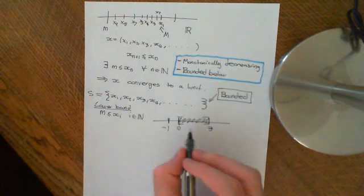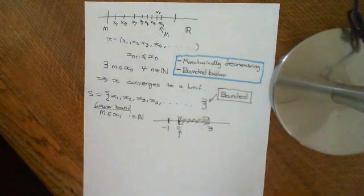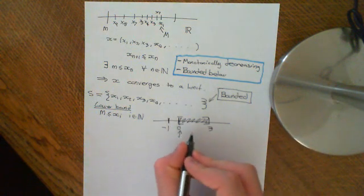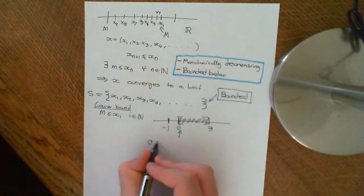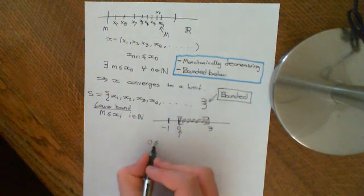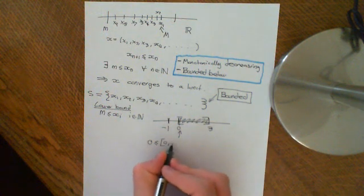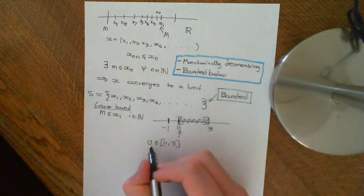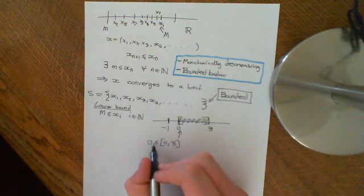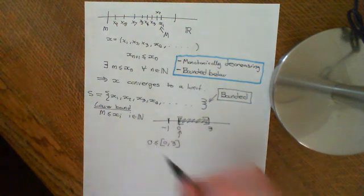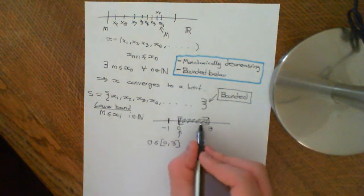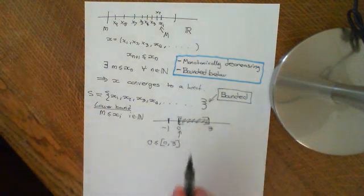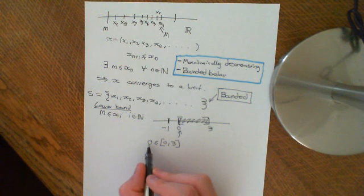However, I want to stress another thing: 0 is also a lower bound for this set. Even though 0 is in the set itself, 0 satisfies the property that it is less than or equal to absolutely every element in this interval. Even 0, because if you put 0 in here, obviously 0 is equal to 0, so it still satisfies it because you've got the less-than-or-equal-to symbol there. So 0 is a lower bound.